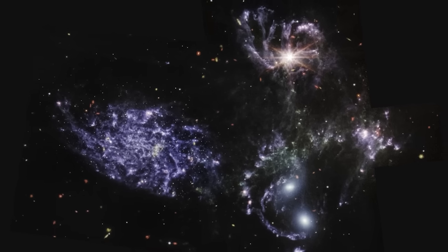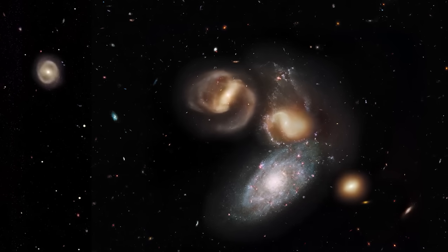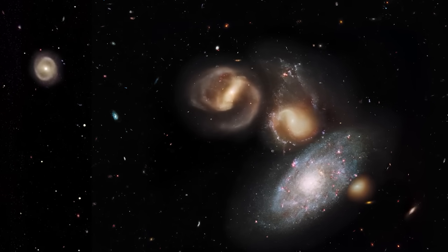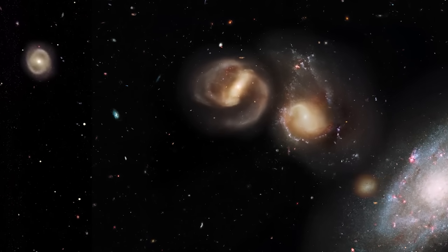The fifth and brightest galaxy, called NGC 7320, appears close to the others only because it appears in the foreground of the other four from our observation point.